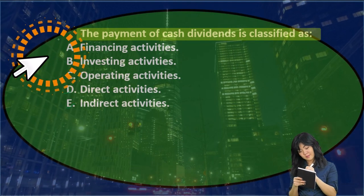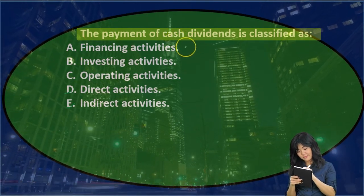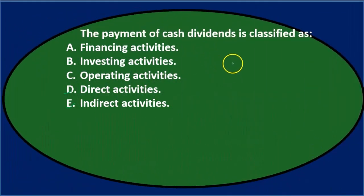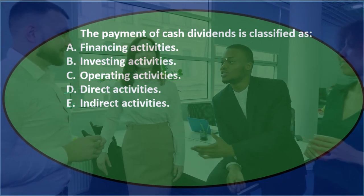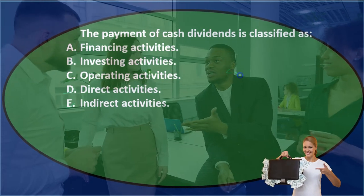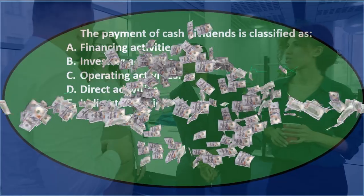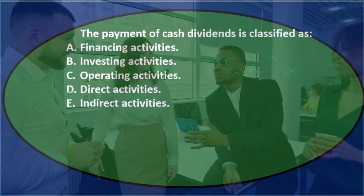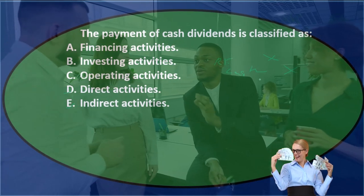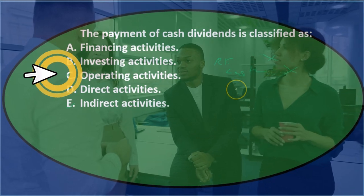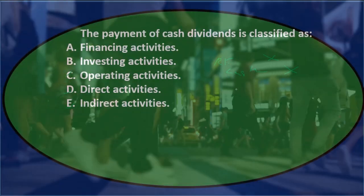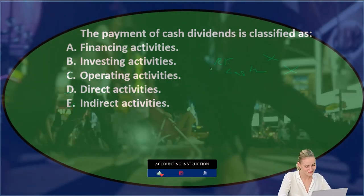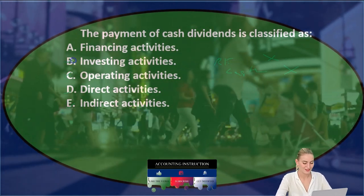The payment of cash dividends — let's think through the journal entry. Cash is going down and it comes out of retained earnings or dividends, which ultimately reduces retained earnings. Are either of those accounts an income statement account? No — no revenue or expense, so it's not an operating activity. Are we purchasing or selling a long-term asset or investment? No — we're reducing retained earnings and distributing money to the owners.